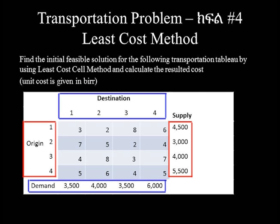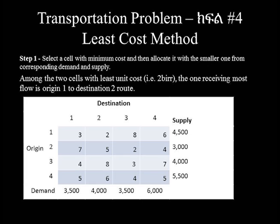Step 1: Select the cell with minimum cost and allocate the smaller value from the corresponding supply and demand. Among the cells with the least unit cost, that is cost 2, the one receiving the most flow is origin 1 to destination 2.